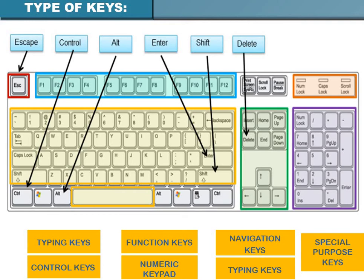The second type is control keys. These are used alone or in combination with other keys to perform certain actions. Frequently used control keys include Ctrl, Alt, Windows logo key, Escape key, Page Up, and Page Down. Control keys provide cursor and screen control.